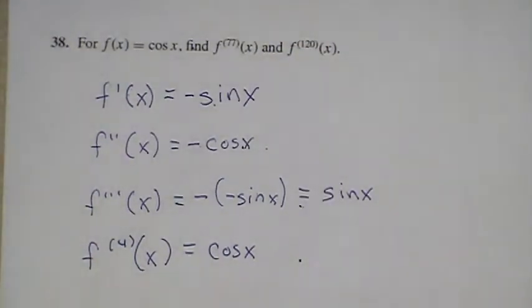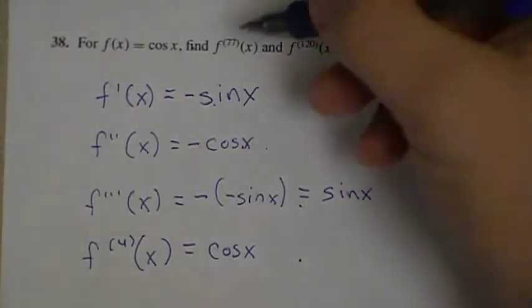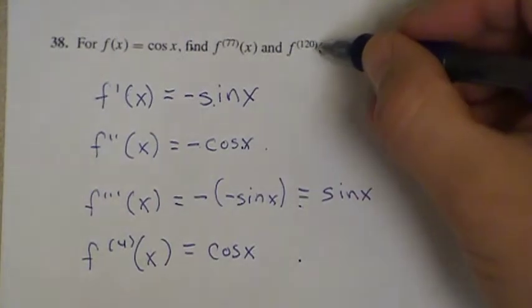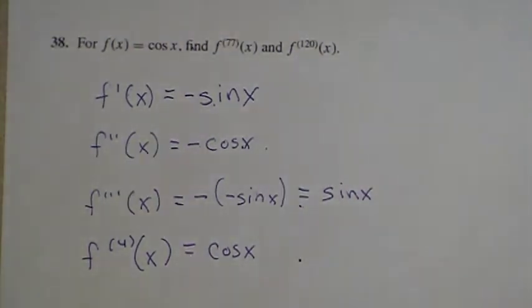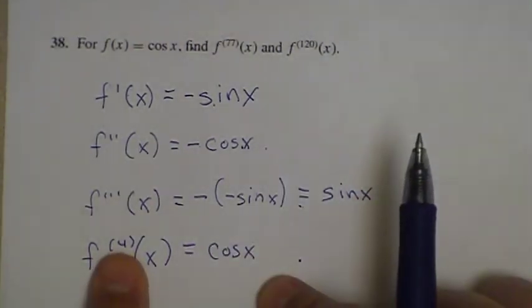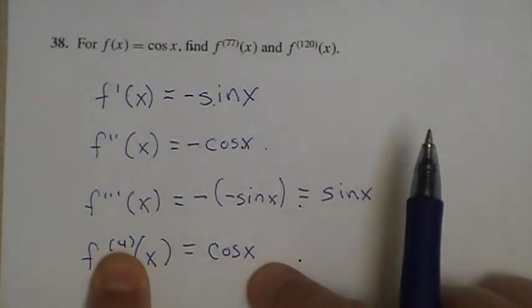So what you can try to do here is you can try to figure out what part in this pattern you'd be stuck on for the 77th derivative and the 120th derivative. So basically any derivative that's divisible by 4 is going to give you cosine.